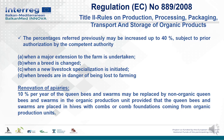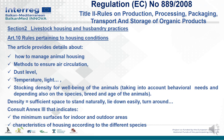Renovation of apiaries: 10% per year of queen bees and swarms may be replaced by non-organic queen bees and swarms, provided they are placed in hives with combs or comb foundation coming from organic production units. Section 2: Livestock Housing and Husbandry Practices. Article 10: Rules Pertaining to Housing Conditions. This article provides details about how to manage animal housing, methods to ensure air circulation, dust level, temperature, light, and stocking density for the well-being of animals.